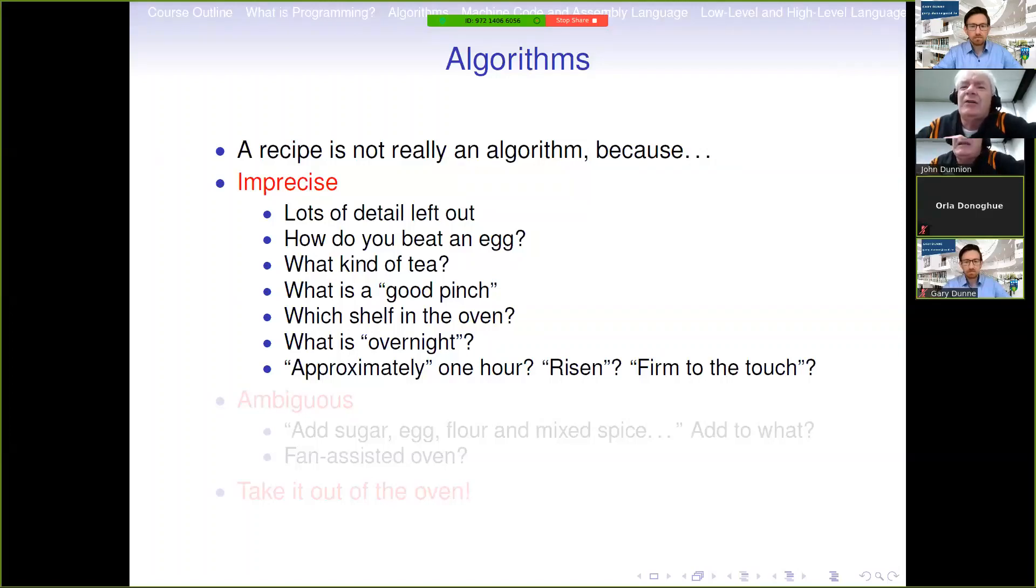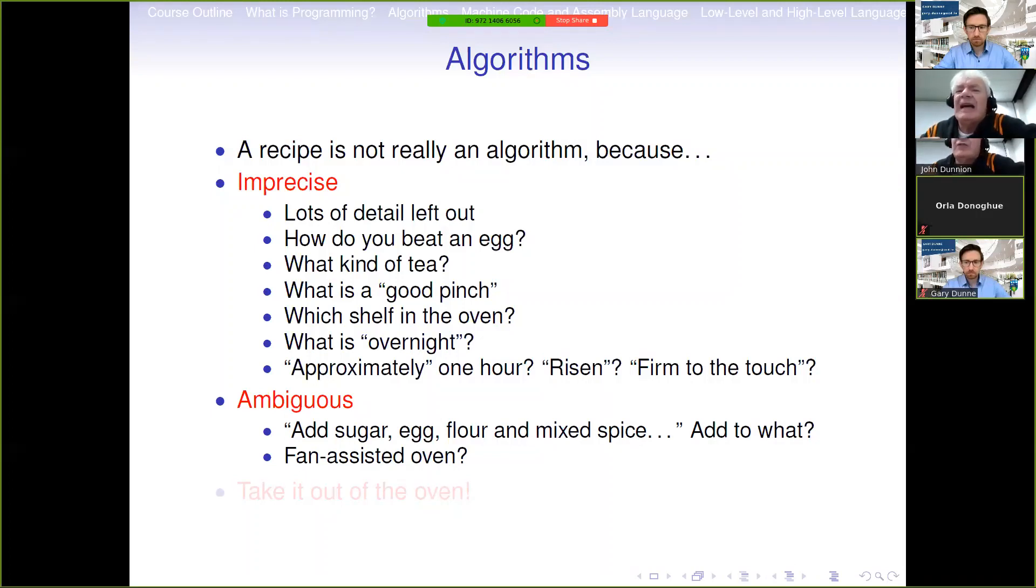If you are a night owl and you don't go to bed until three o'clock in the morning and you get up at seven o'clock, is that enough of an overnight compared to somebody who goes to bed at 10 o'clock and doesn't get up till midday? The recipe says approximately one hour, it makes reference to risen, and it talks about being firm to the touch. Again, there's a lot of imprecision there. Also, there's a bit of ambiguity in the algorithm. It talks about add sugar, egg, flour and mixed spice, but it doesn't say add to what. Remember we're talking, if we want to have this as an algorithm, think of trying to explain this to a stupid robot. Everything has to be explained in detail. The recipe doesn't account for fan-assisted ovens because as bakers will know, a fan-assisted oven will be hotter. You'll either put it in for less time or you'll need less heat. One of the omissions that we have in our algorithm is that it doesn't actually say to take it out of the oven. If you actually read the recipe carefully, it forgets to say take the thing out of the oven.